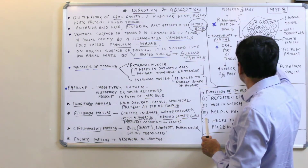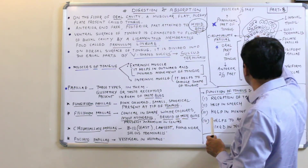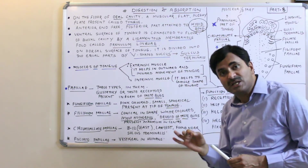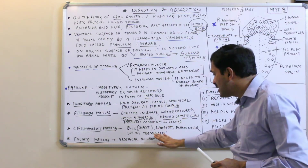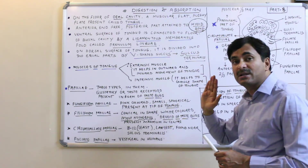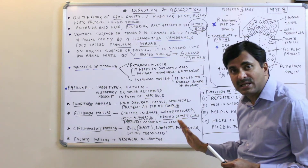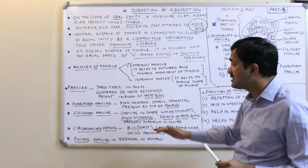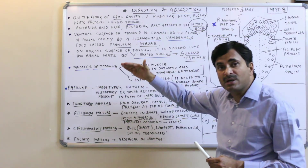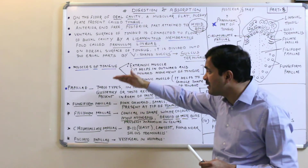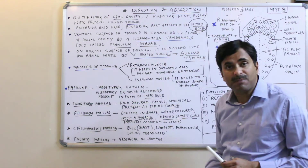The circumvallate papillas are located just near the sulcus terminalis. They are the least in number, only 8 to 12, but are the largest type of papillas. So these were the three types of papillas found on the human tongue: fungiform papilla, filiform papilla, and the circumvallate papilla.